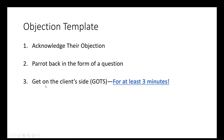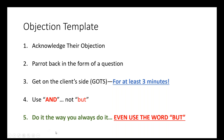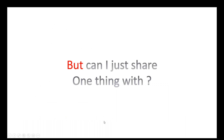So when we acknowledge the objection, pair it back in the form of a question, get on the client's side for at least three minutes, and use the word 'and' — not 'but' — what would happen? What would happen if you acknowledged it, paired it back in the form of a question, got on their side for three minutes, used the word 'but,' and then overcame it the way you always do? You say, 'but, can I just share one thing with you?'